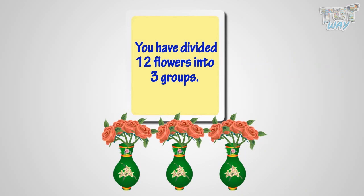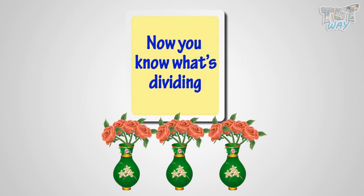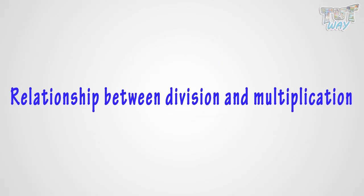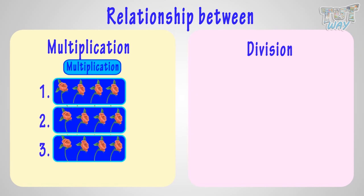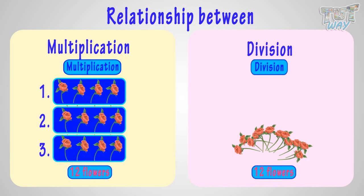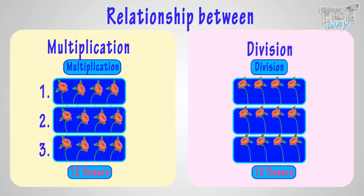Yay! You have divided twelve flowers into three groups. Now you know what's dividing. Now we will learn what's the relationship between multiplication and division. Do you know division is opposite of multiplication? Let's see how. Making three rows of four flowers each will make twelve flowers.